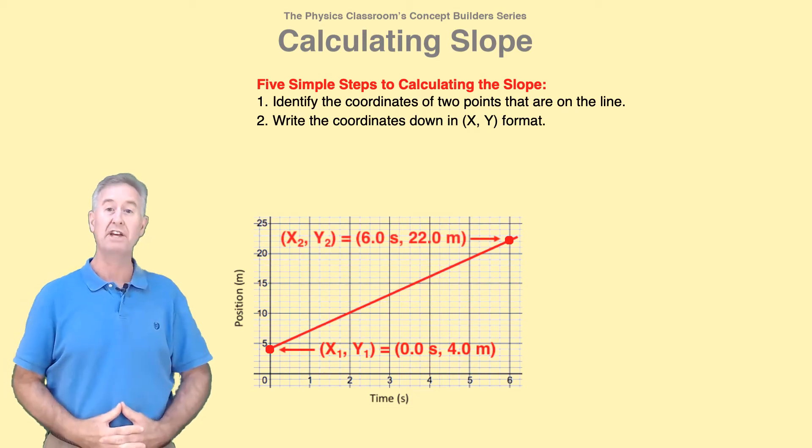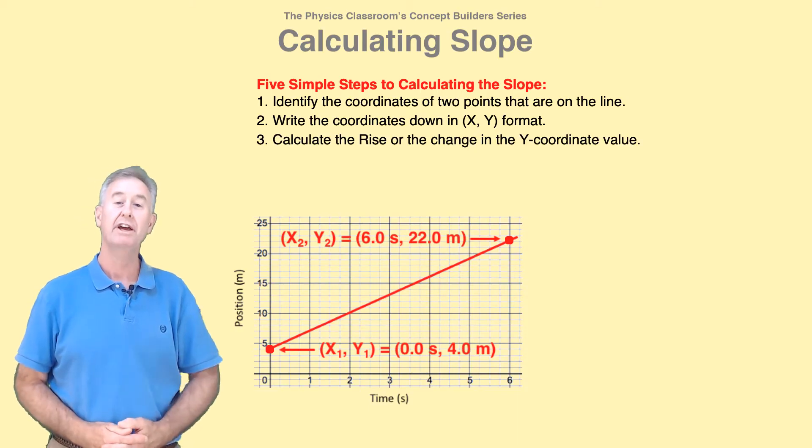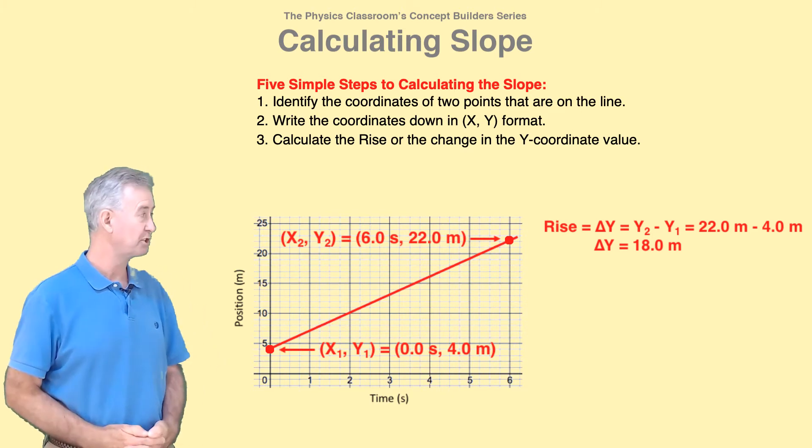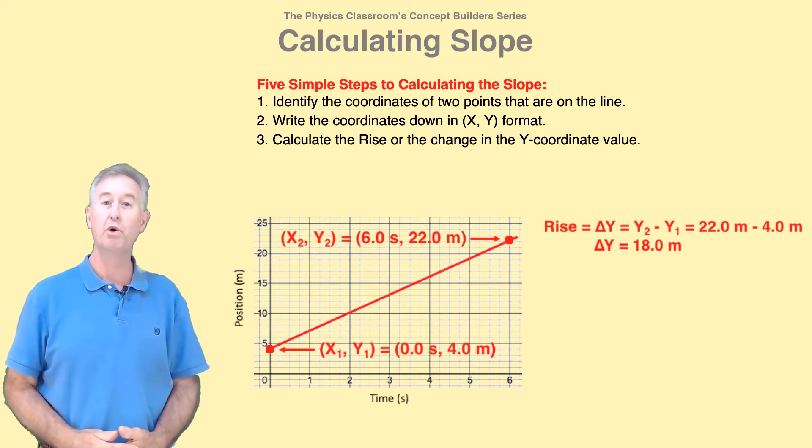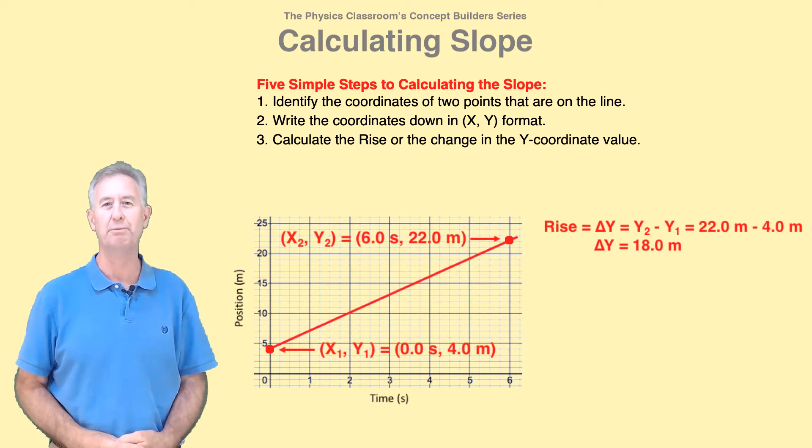That point has x2, y2 coordinate values of 6.0 seconds and 22.0 meters. Third, calculate the rise, or the change in y-coordinate values. That's y2 minus y1. That's 22 meters minus 4.0 meters. Delta y is equal to 18.0 meters.